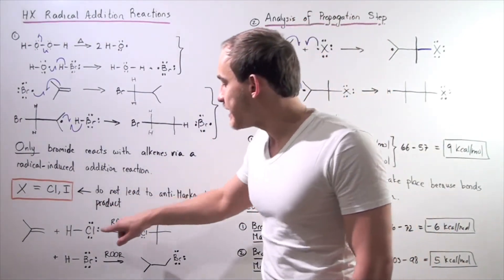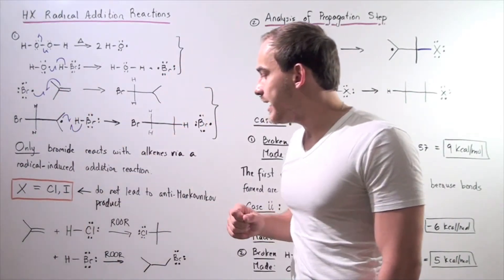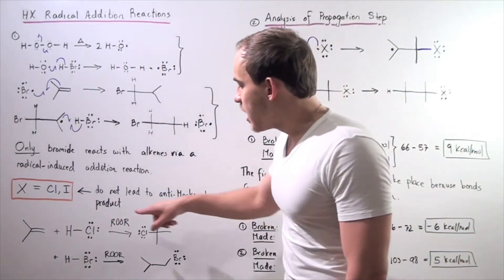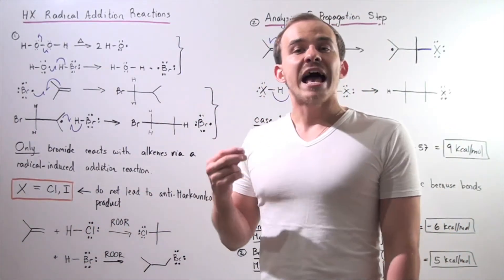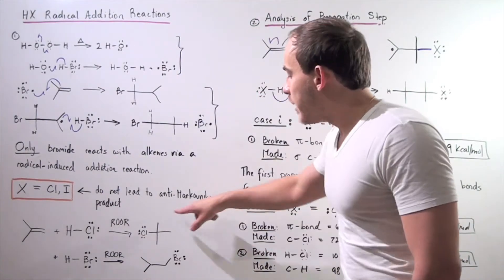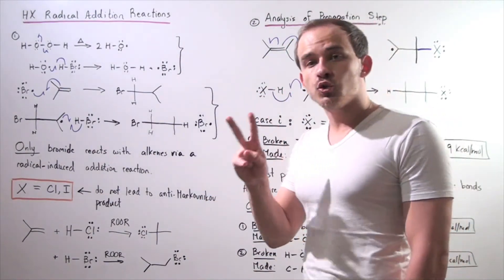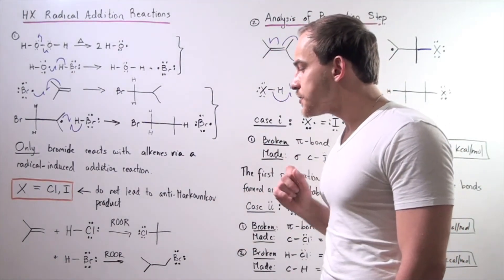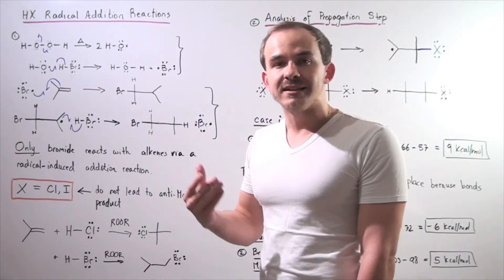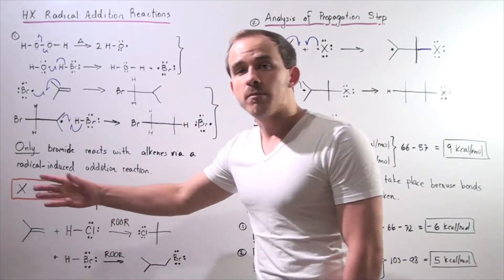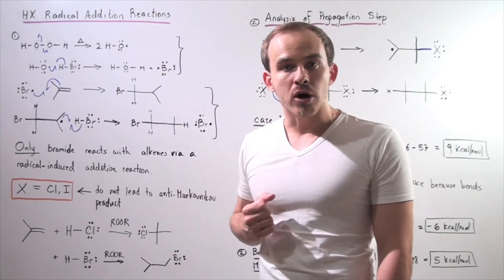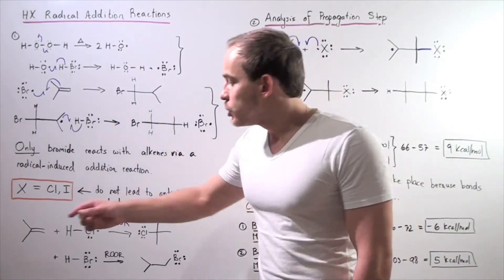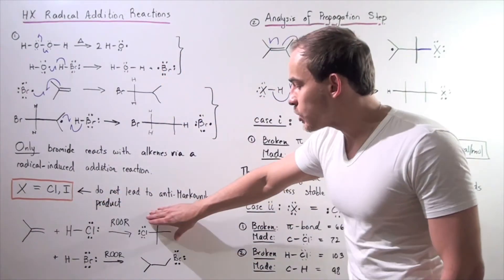In fact, if we take the following alkene and mix it with HCl in the presence of peroxide, that will produce a Markovnikov product via a two-step mechanism — a straightforward addition mechanism. In the first step, the H adds to this carbon forming the tertiary, more stable carbocation intermediate. And in the second step, the chloride adds to this carbon forming our Markovnikov product.